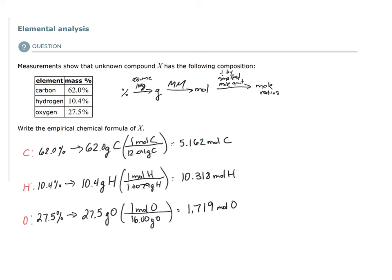I have this many moles of this, this many moles of this, this many moles of this. If I find the smallest mole amount, which appears to be oxygen and divide everything by that smallest mole amount,